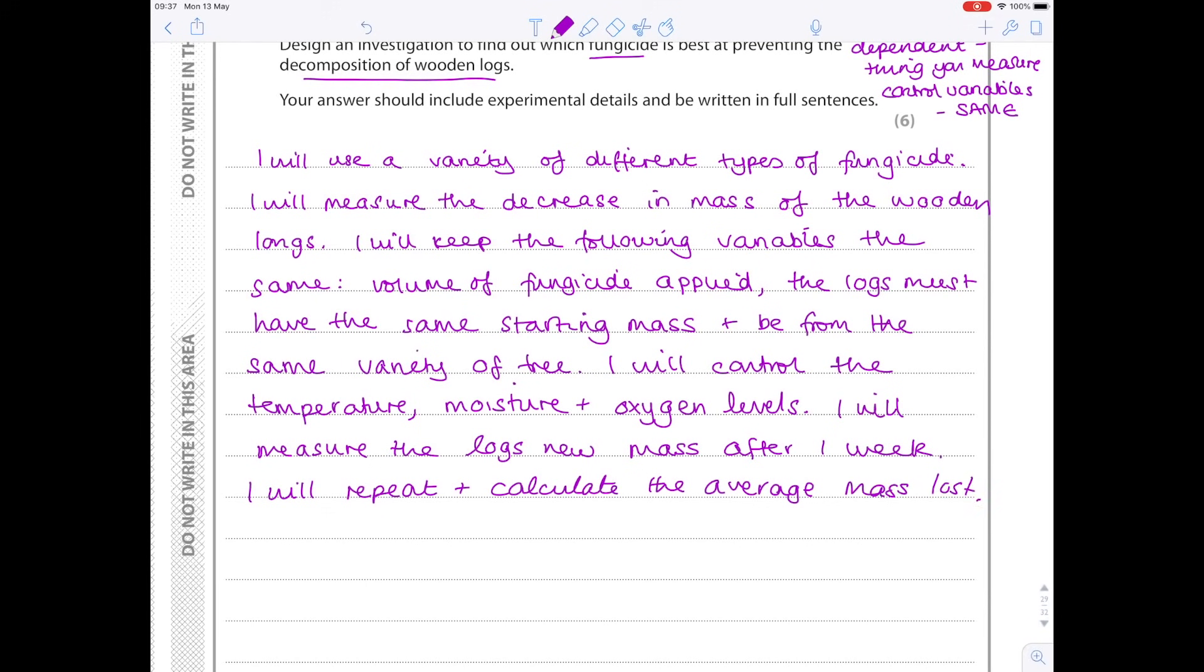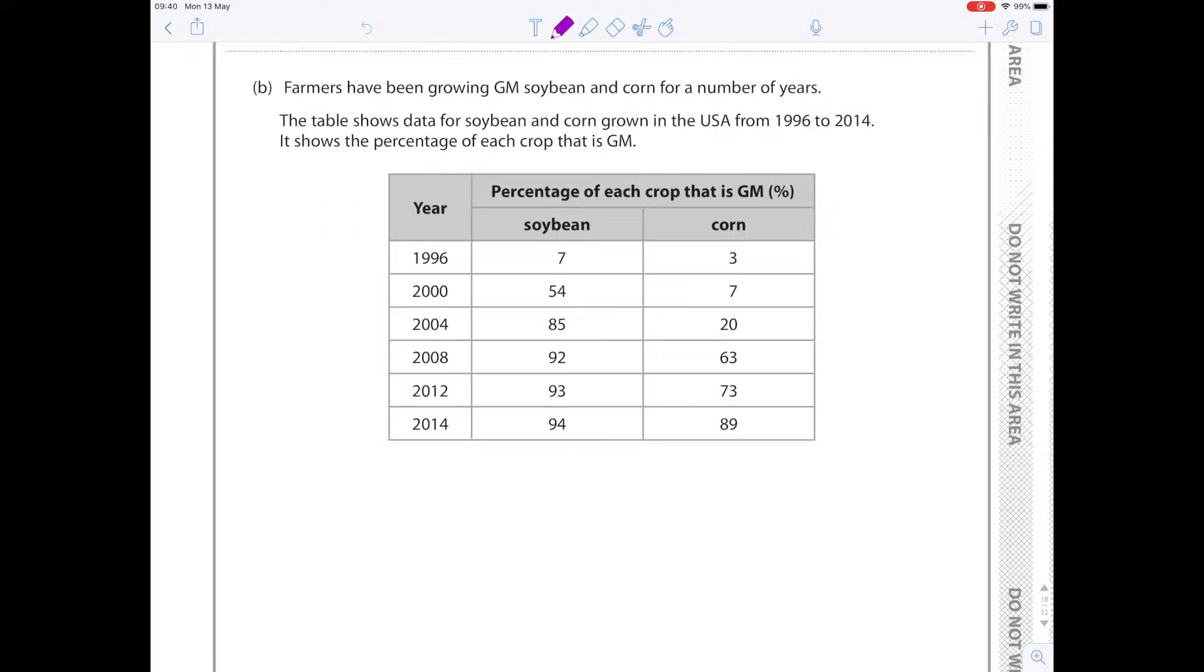So I have quite a few inquiries about how you know how to plot graphs, what needs to go on the axes. I just want to make sure that you're going to draw your graph properly. Looking at this example, farmers have been growing GM, so genetically modified, soybean and corn for a number of years. The table shows data for soybean and corn grown in the USA from 1996 to 2014. It shows the percentage of each crop that is GM. So we have list of dates and the percentage of each crop that is genetically modified, and we're comparing soybean and corn.